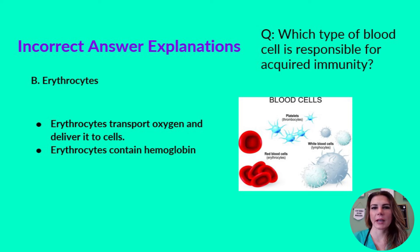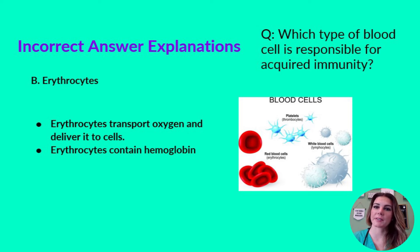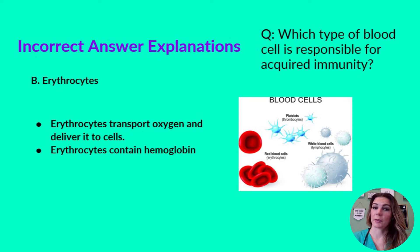The next incorrect answer explanation: erythrocytes. They are actually responsible for transporting and delivering oxygen to cells. Erythrocytes contain hemoglobin, which helps in oxygen transport. They do not have anything to do with immunity and can therefore be eliminated.